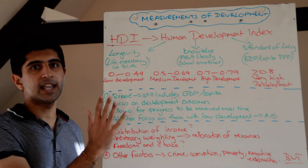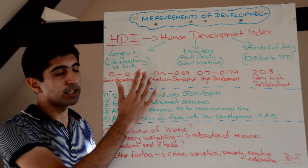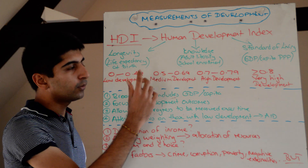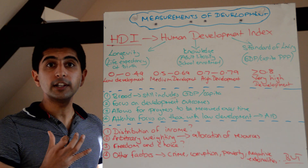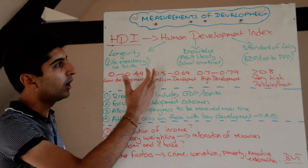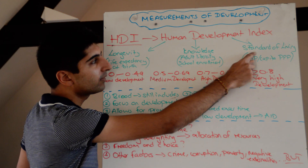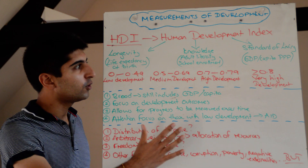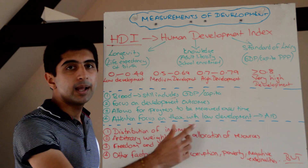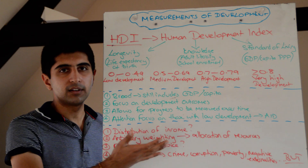There is a health indicator in there. There is also an education measure — we're trying to measure knowledge. How is that measured? Adult literacy is used, and school enrolment is used, so these are two measures of knowledge. Standard of living is also measured, and that's done using GDP per capita, PPP, to come up with a measure of standard of living.